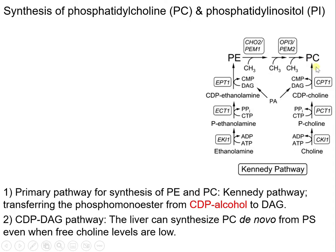This is PC. The primary pathway for synthesis of PC is the Kennedy pathway. Choline is first phosphorylated and loaded onto a nucleotide. The result is CDP-choline. DAG then accepts phosphocholine from CDP-choline, and the result is PC.